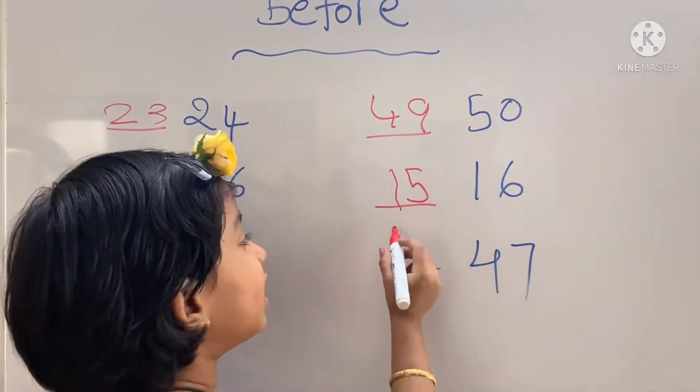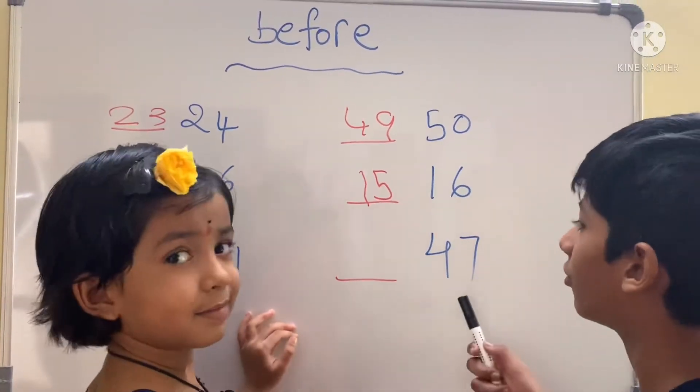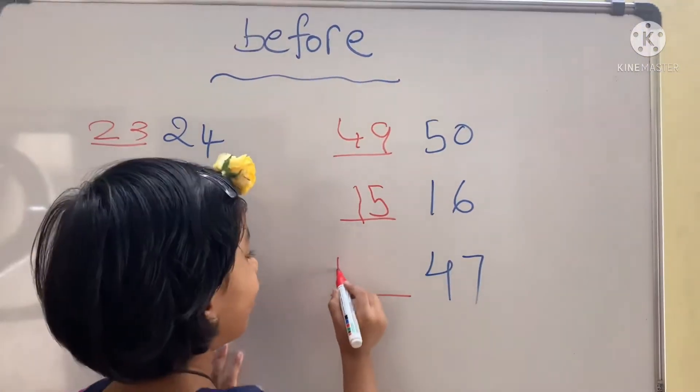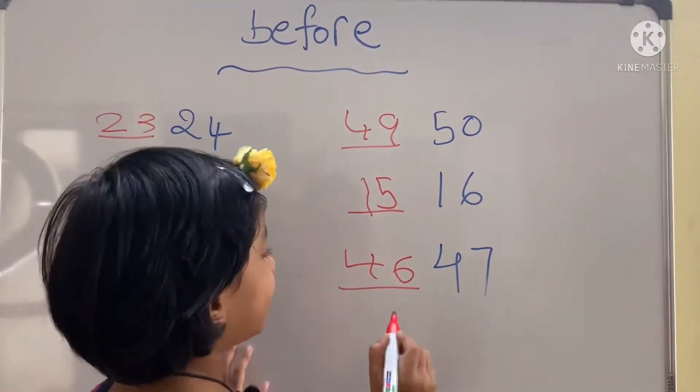Which number comes before 47? Four tens, six ones, 46.